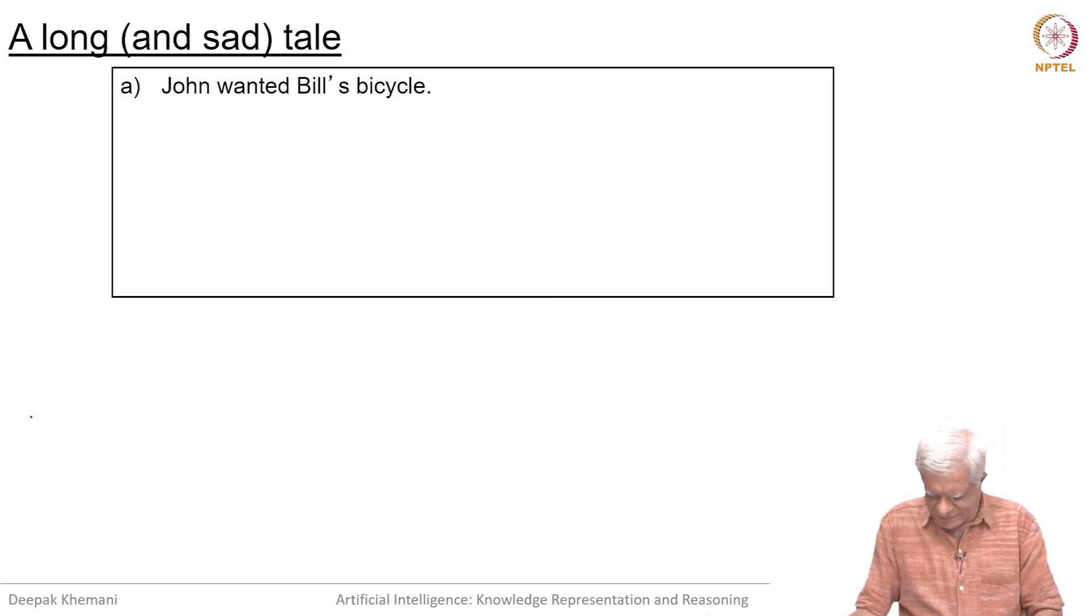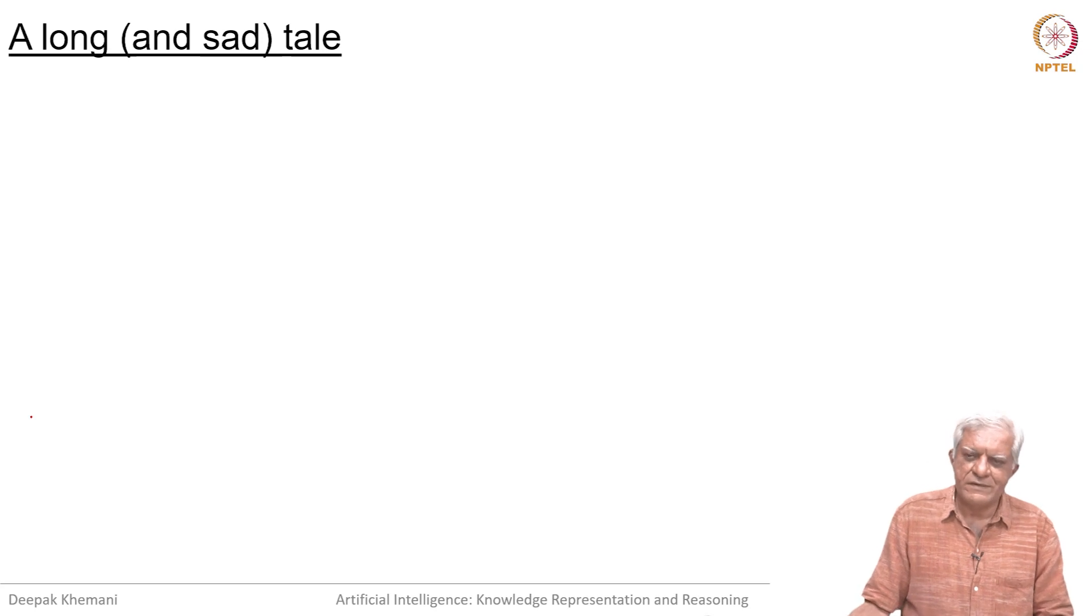There is a long story that will take a bit of time. What we will do is we will take a quick break and come back and read this story, which is about how one person wanted a bicycle which the other person had and what happened after that. We will see that in the next video.